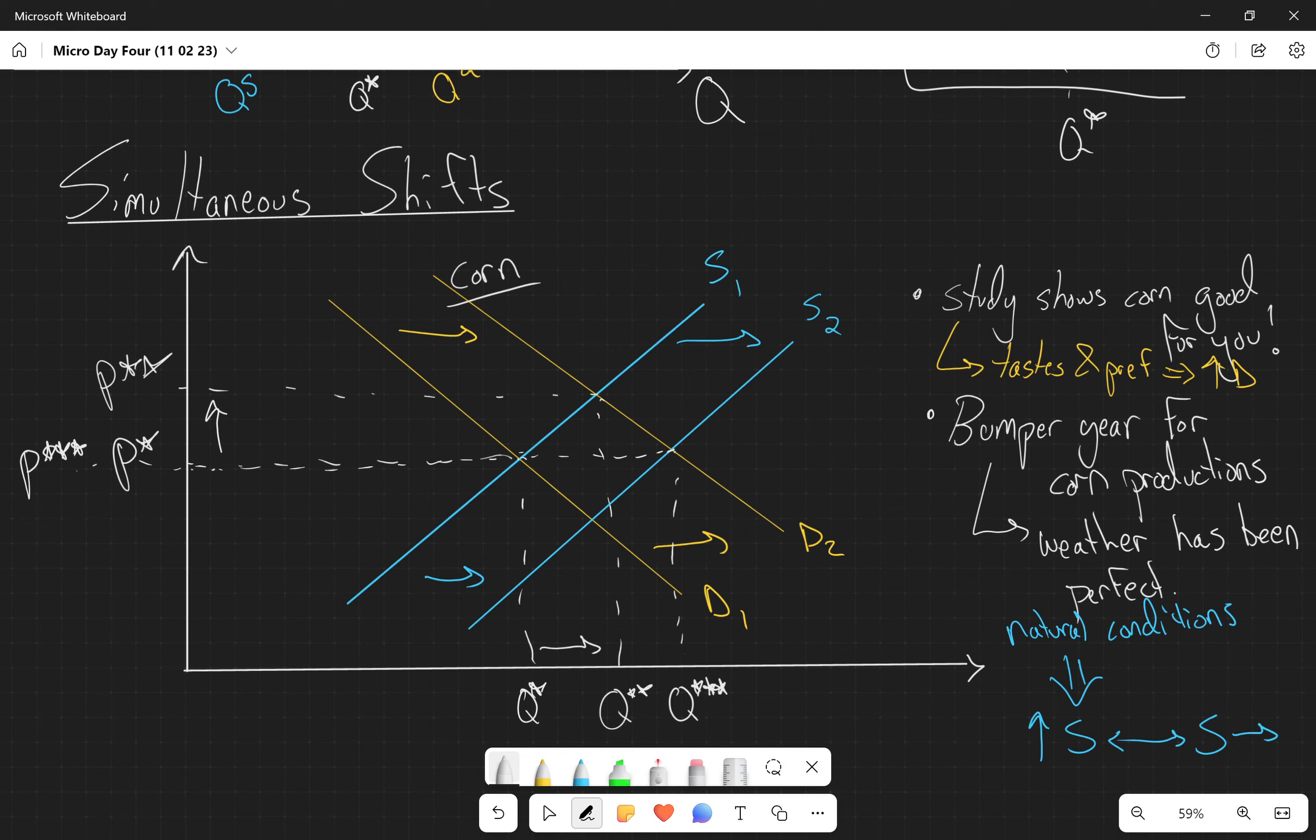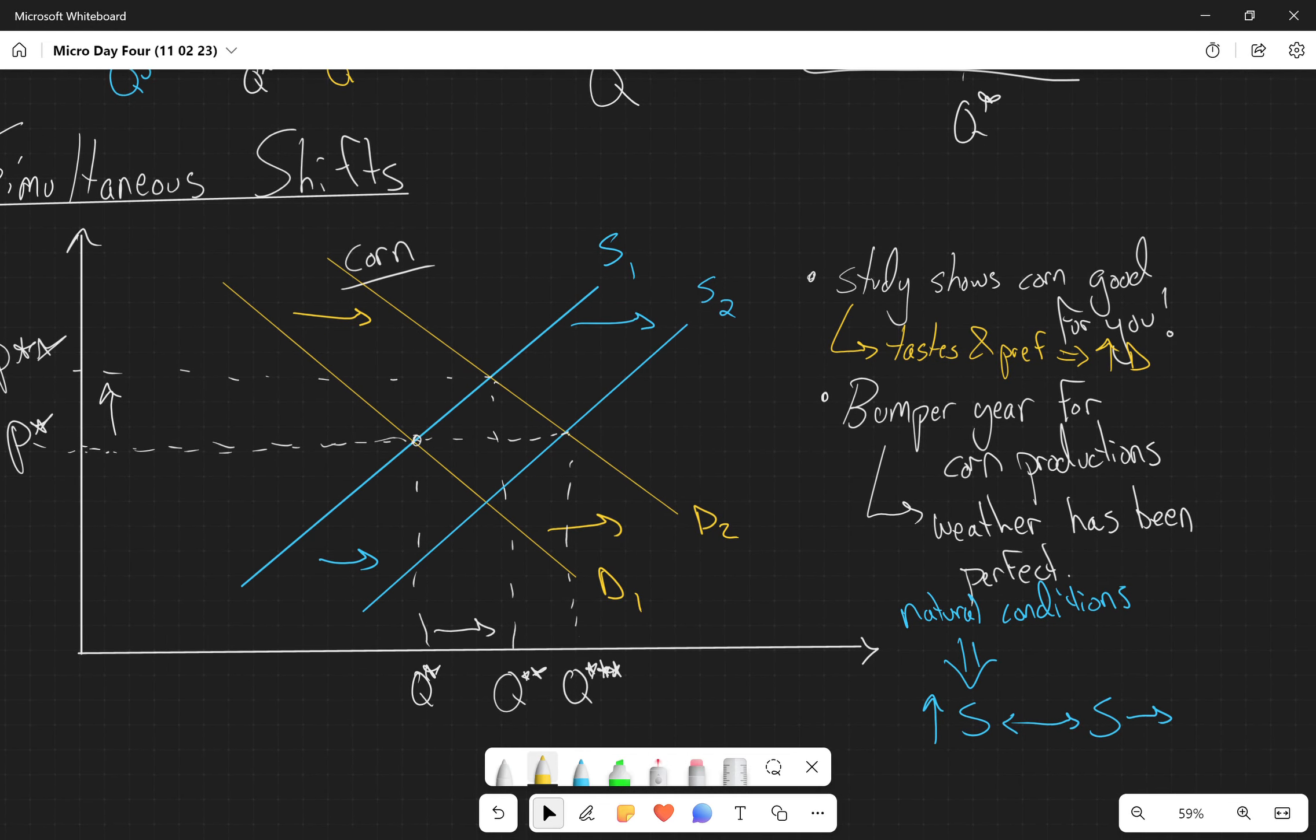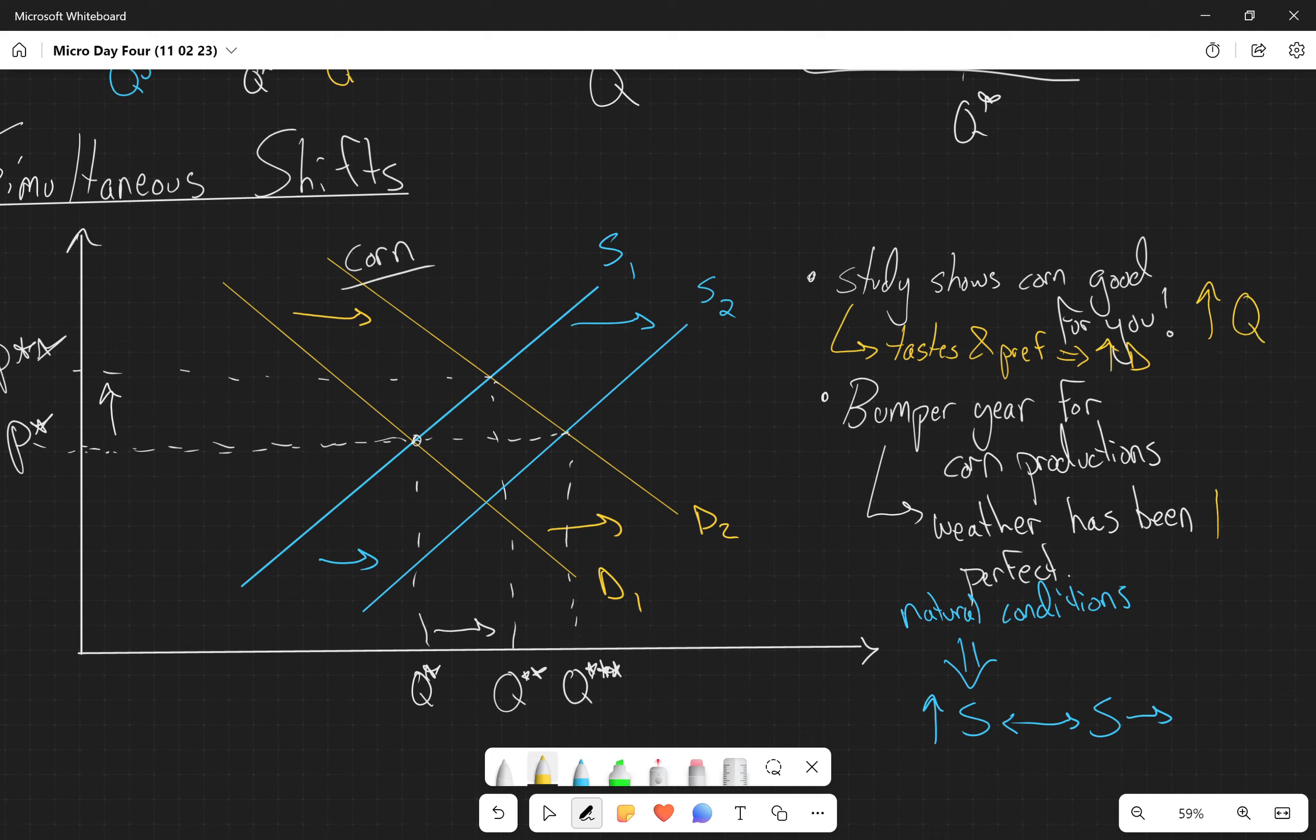This is part of the reason why all models are toy models. All models have simplifications in them. The more we start to complicate them, the less tractable they become in the conclusions that we can make. So this particular one, let's look at what's happening with quantity. From Q star one, this initial equilibrium, we end up increasing our quantity to Q double star, and then the next shift gets us from Q double star to Q triple star. So this shift had an increase in the quantity, this shift had an increase in the quantity. So when we add those together, we get a double increase in the quantity, and that's exactly what we see. So unambiguously, we know quantity has increased because of these two events.